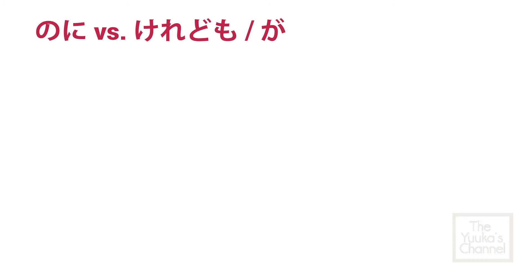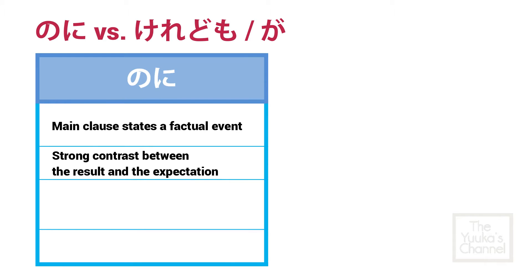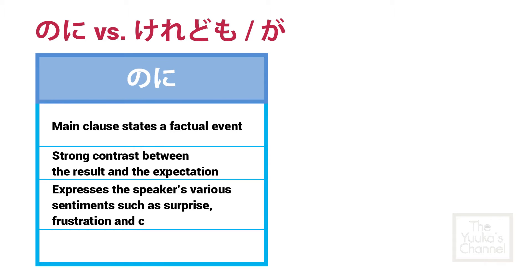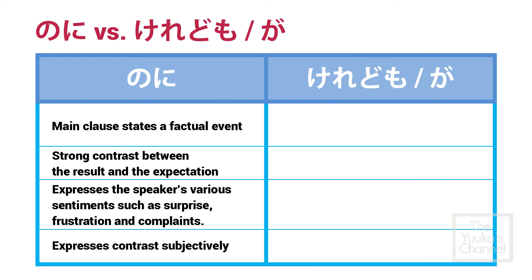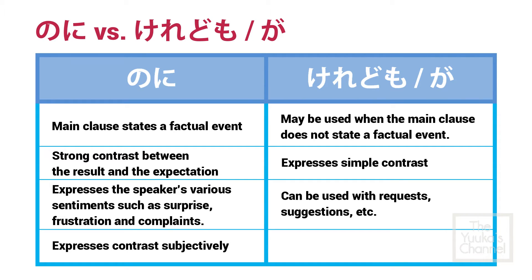The difference between noni and keredomo or ga: For noni, the main clause states a factual event. There is a strong contrast between the result and the expectation. It expresses the speaker's various sentiments such as surprise, frustration, and complaints. It expresses contrast subjectively. Keredomo or ga may be used when the main clause does not state a factual event. It expresses simple contrast, can be used with requests and suggestions, and expresses contrast objectively.